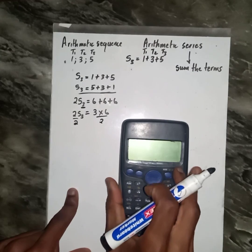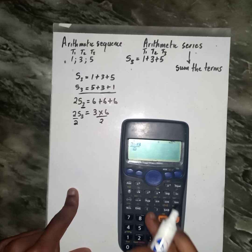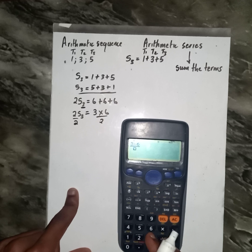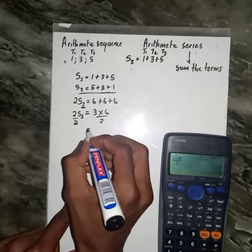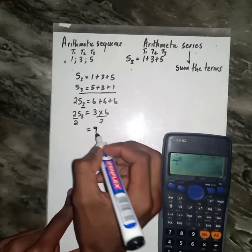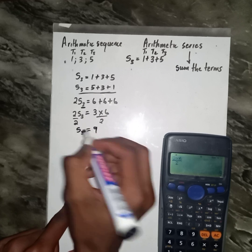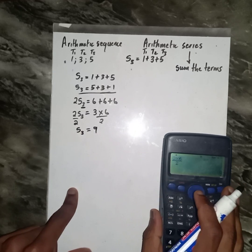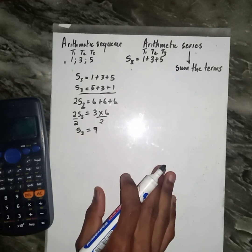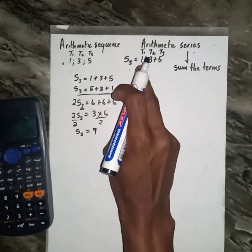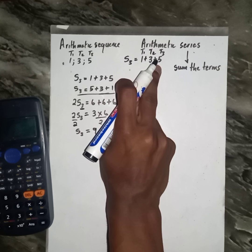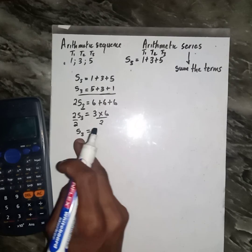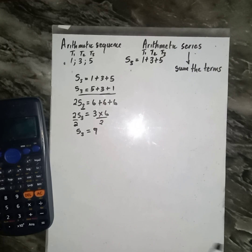Then we also have our calculator. Two times three — we get nine for three terms. It's true: one plus three plus four, that's five, I get nine. Which is our answer here.